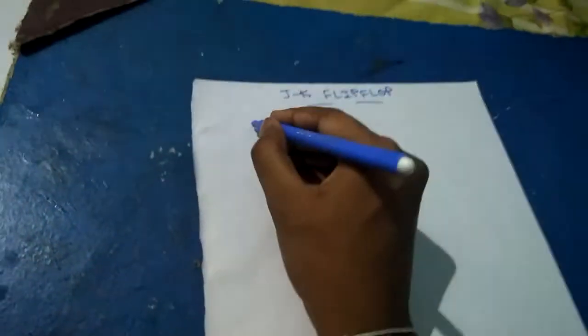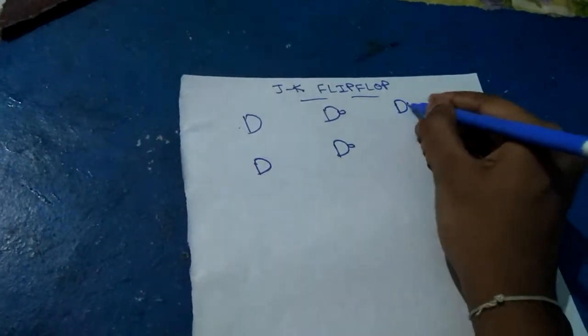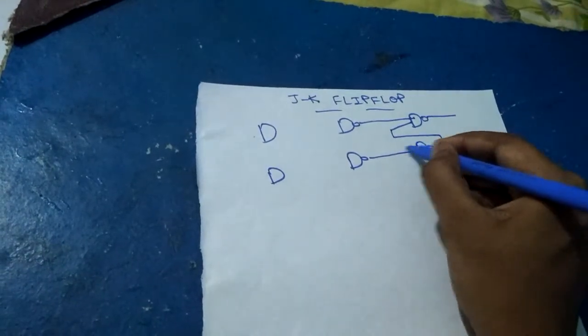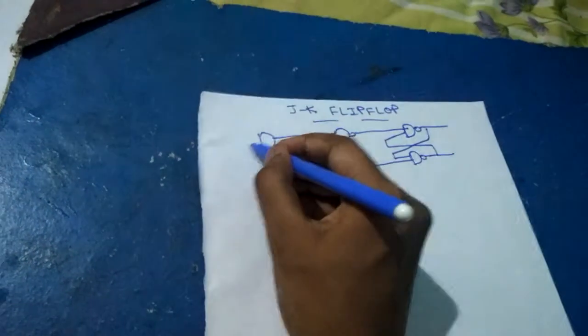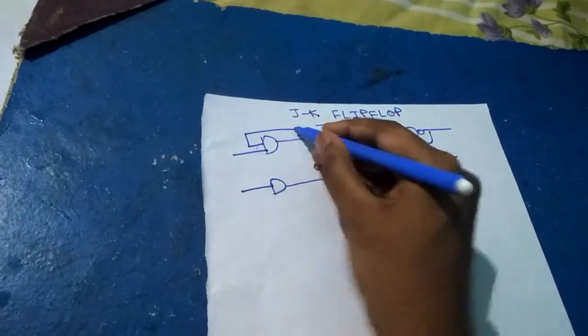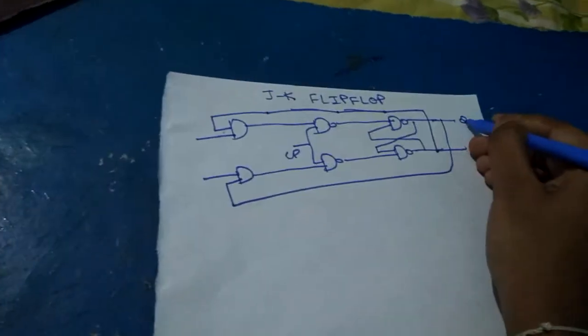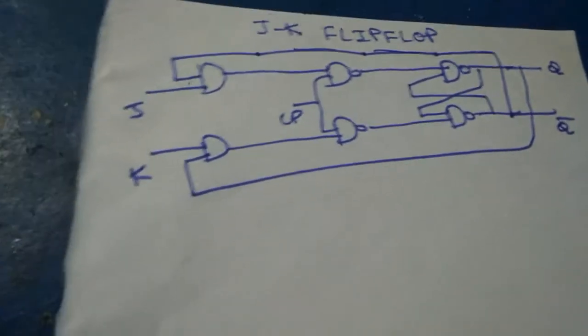Hi friends, today we are going to discuss the JK flip-flop and the master-slave JK flip-flop. First we'll discuss the basic JK flip-flop. Q and Q-bar are the outputs, J and K are the inputs. This is the logic diagram of the JK flip-flop.